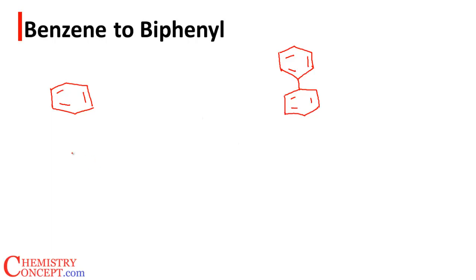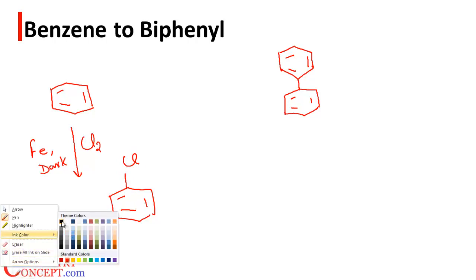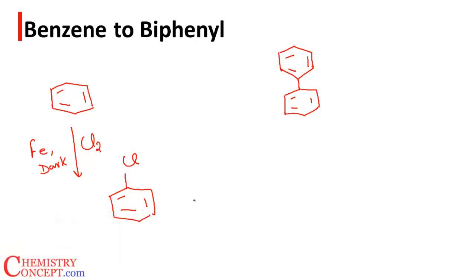So how to attach two benzene rings? First of all, we'll react benzene with chlorine in presence of iron in the dark to carry out the chlorination of the benzene to get chlorobenzene.